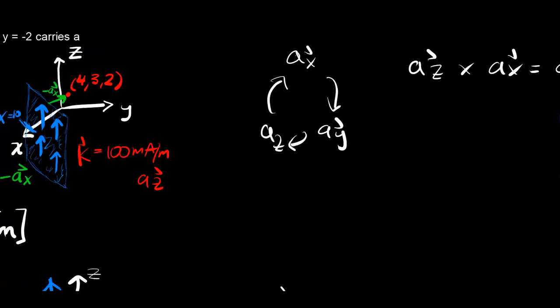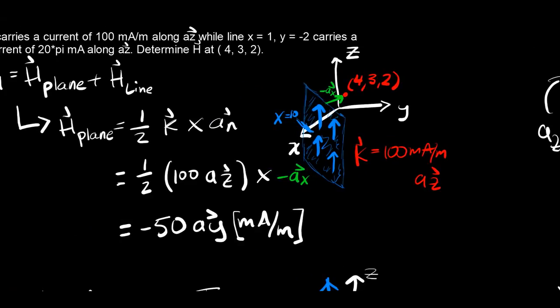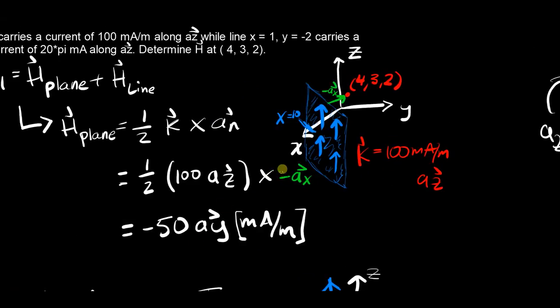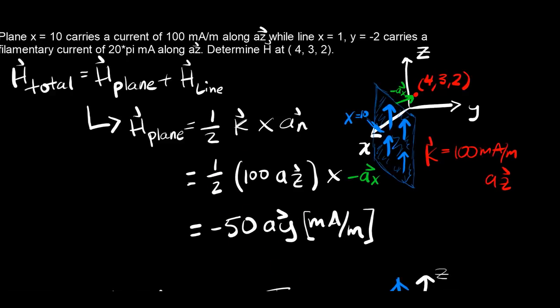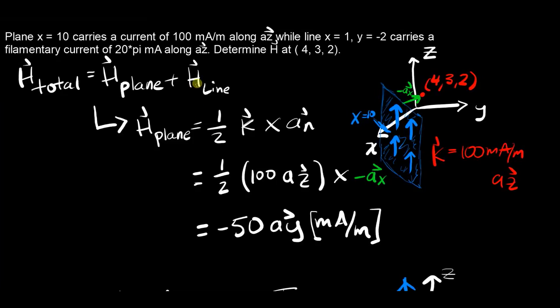You'll notice I did have this negative ax here. I just basically just brought it out to the front. It doesn't really make a difference. Whether you cross az with negative ax, you'll get negative ay. Or if you just take this negative out from the start, you'll end up with the same answer. So now that that's taken care of, let's find the magnetic field due to the line here.